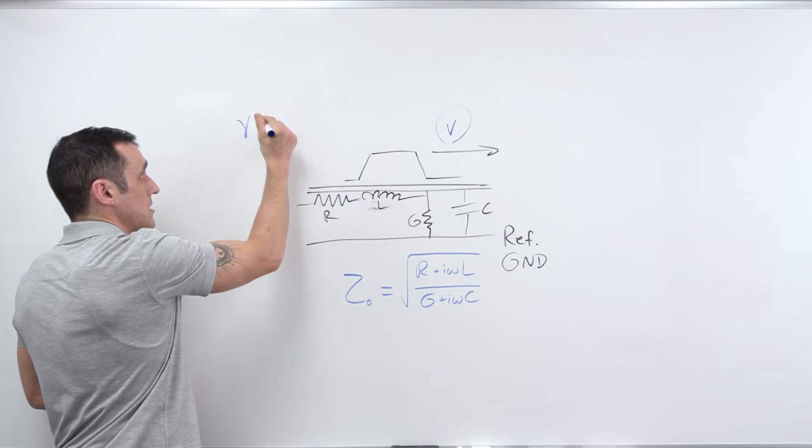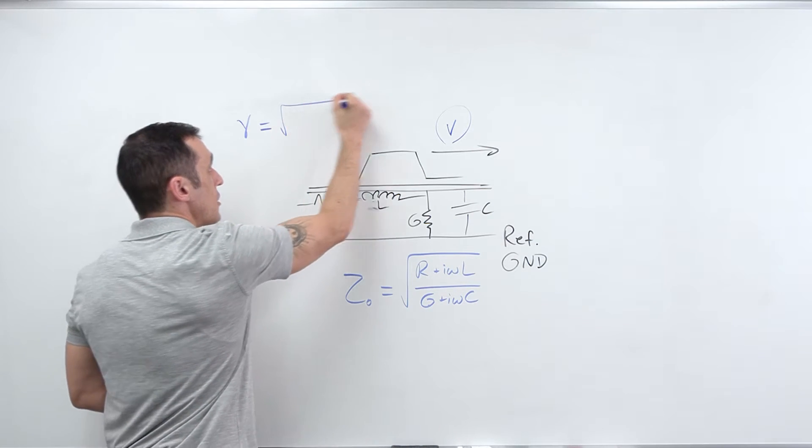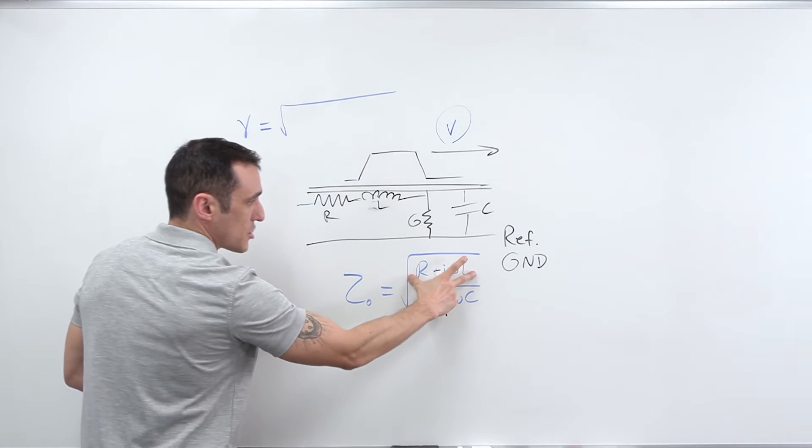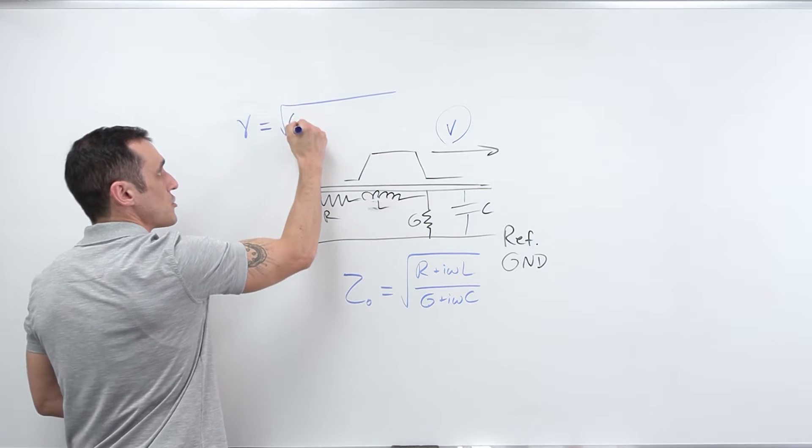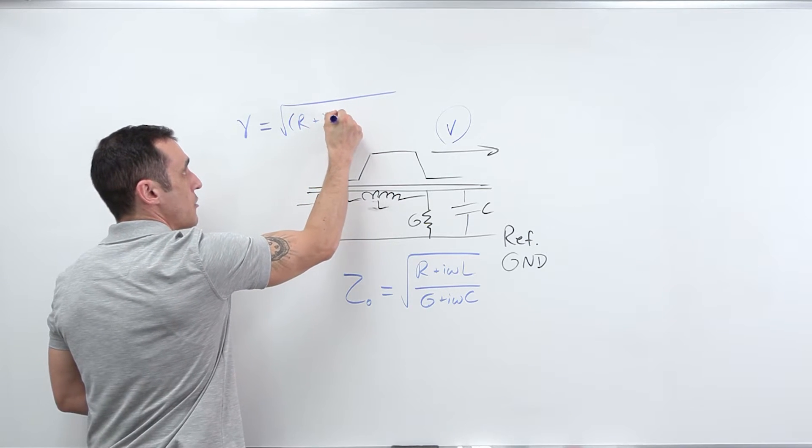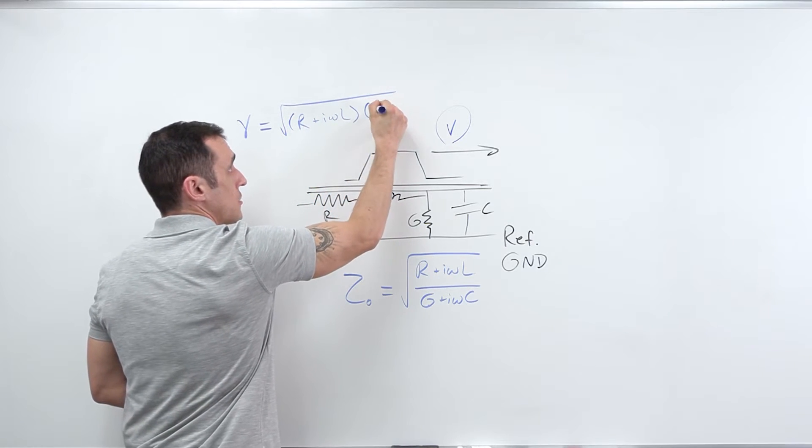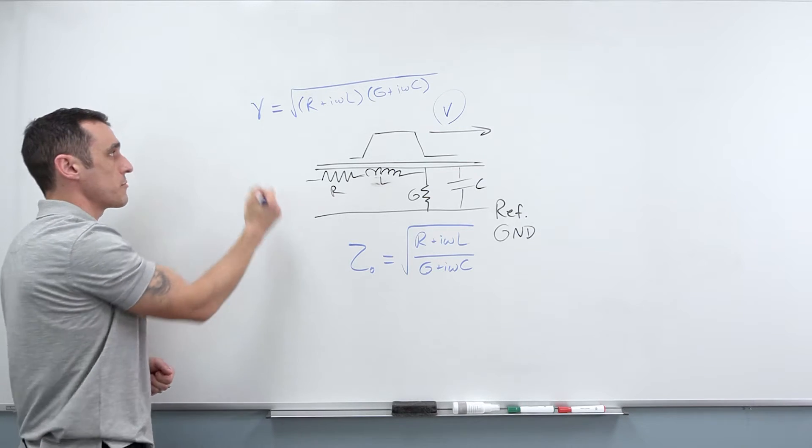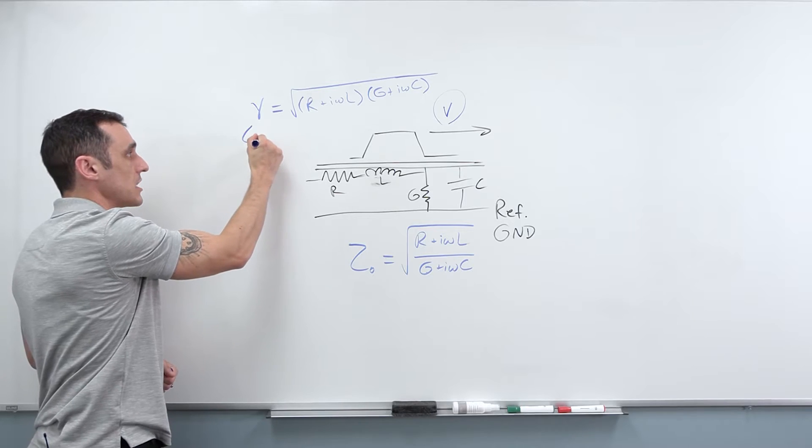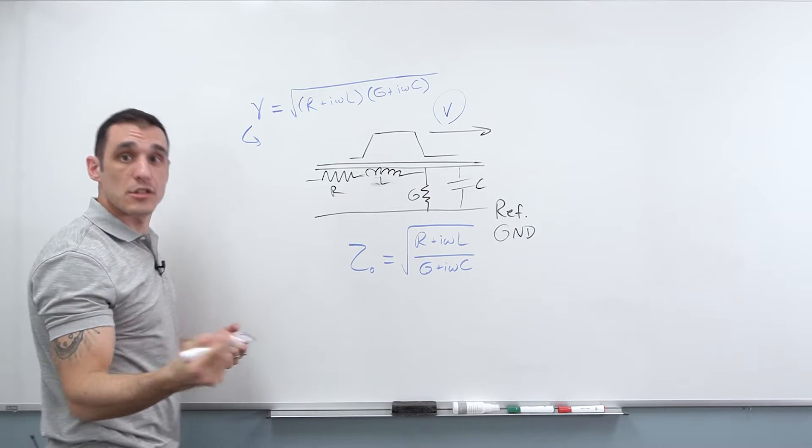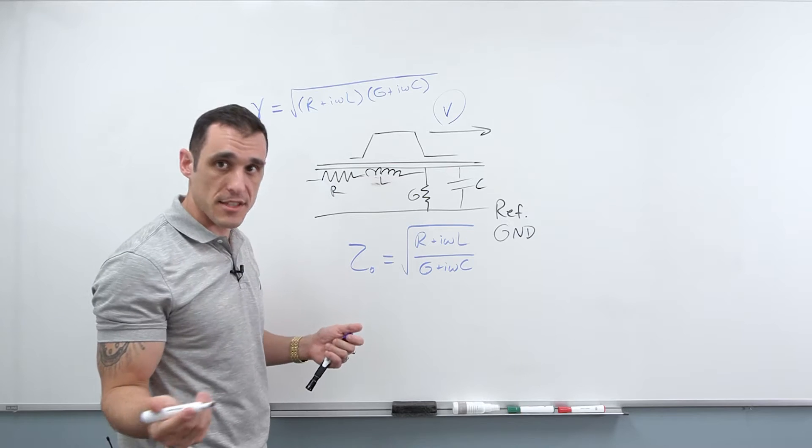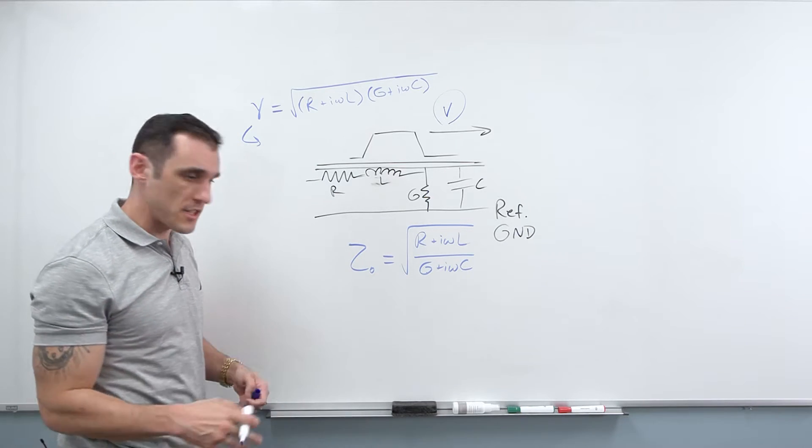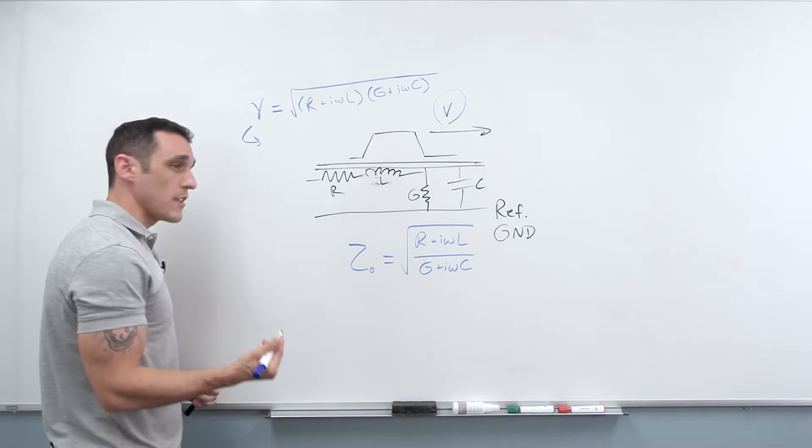So the propagation constant gamma is just equal to square root of, and you can always remember it like this. It's this numerator multiplied by this denominator. So it's just R plus I omega L G plus I omega C. This term gamma is actually very important because this is actually a wave number. And so if you remember your wave mechanics, if you've ever taken any physics classes that deal with wave propagation, even if you've taken like an acoustics class, you'll hear this very important quantity called a wave number.